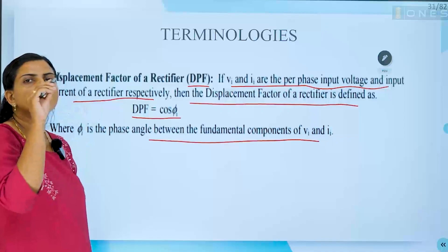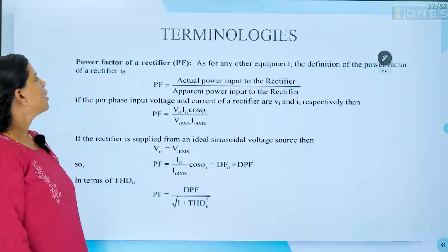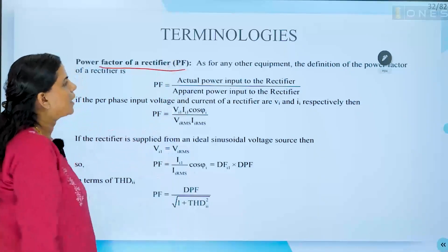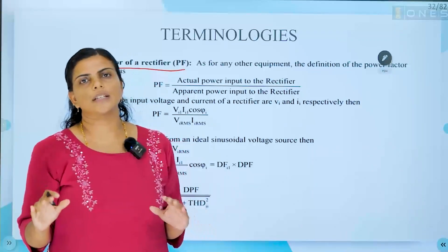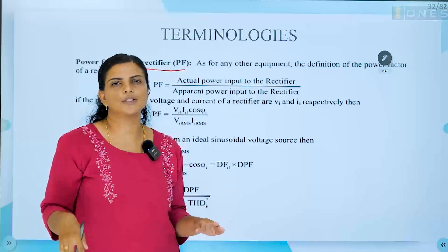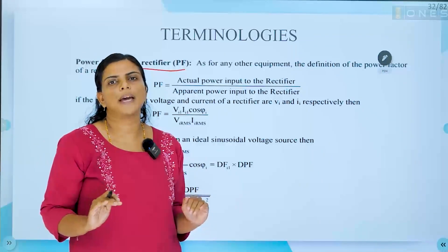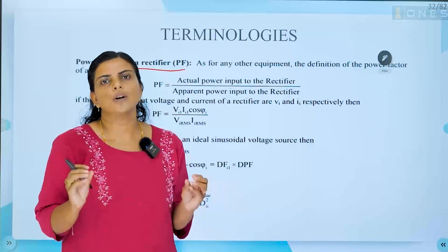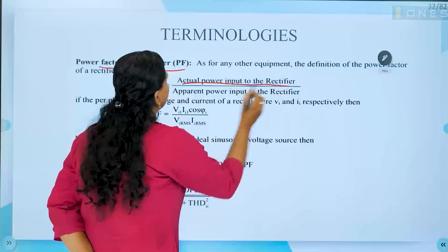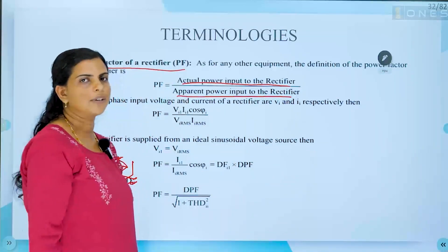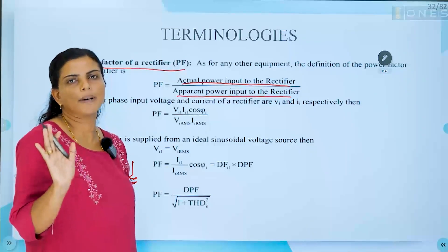The distortion factor is the ratio of fundamental value to RMS value. Now, power factor of a rectifier — generally, what do you mean by power factor? Don't just say cos φ. Say actual power divided by apparent power. That is true power divided by apparent power. Power factor equals actual power input to the rectifier divided by apparent power input to the rectifier.